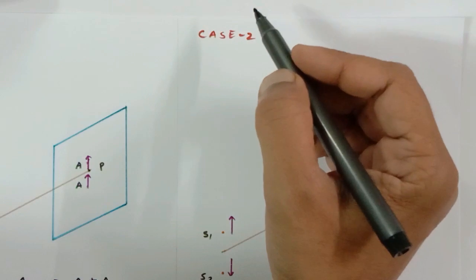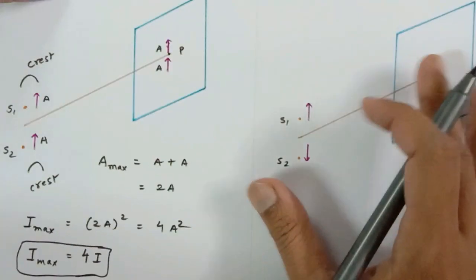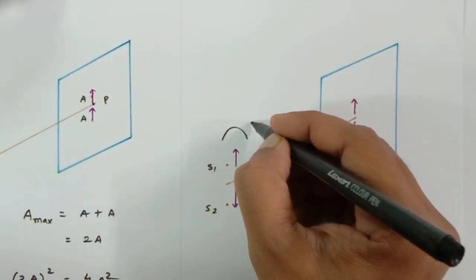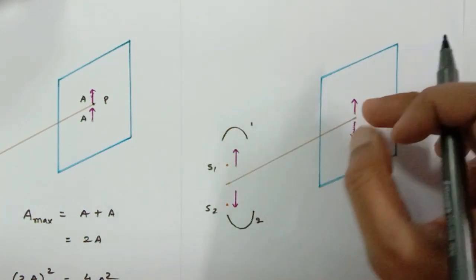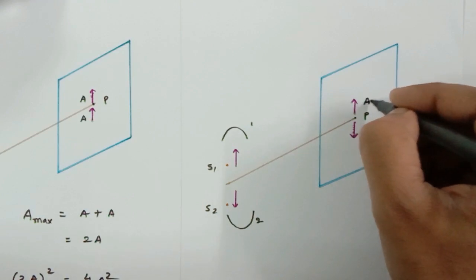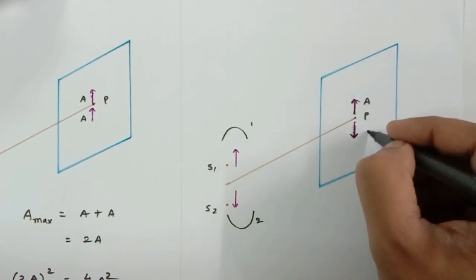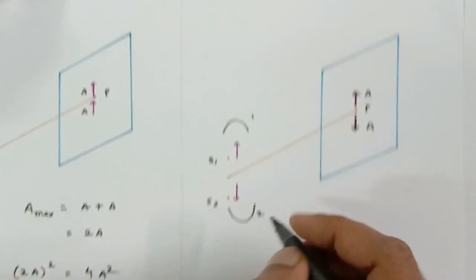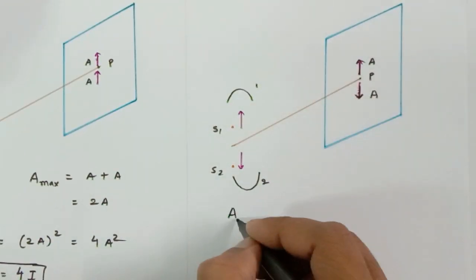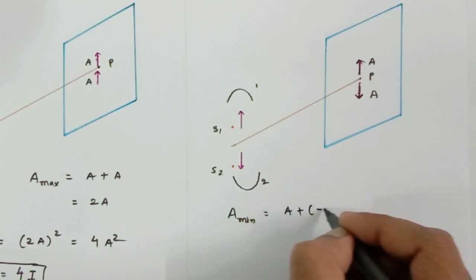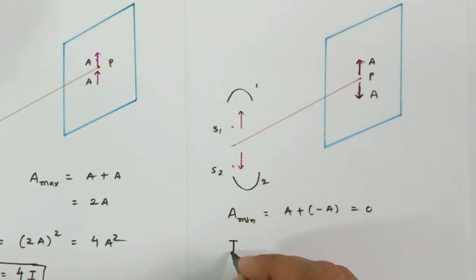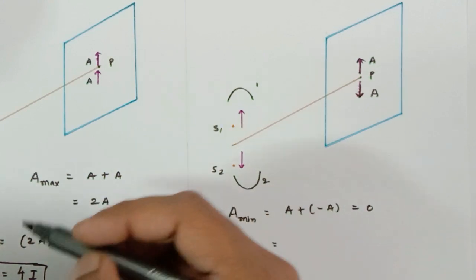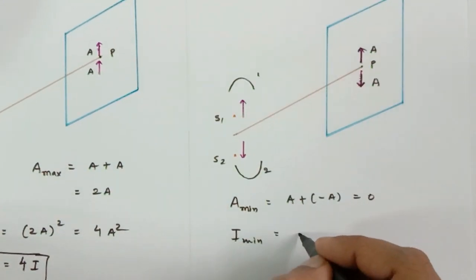This is Case 2, where crest and trough are meeting. In Case 1, crest and crest met at point P; now the crest of wave one and the trough of wave two are meeting at point P on the screen. The amplitudes will try to cancel: 'a' in the upward direction and negative 'a', so the net amplitude would be zero — minimum amplitude is a + (−a) = 0.